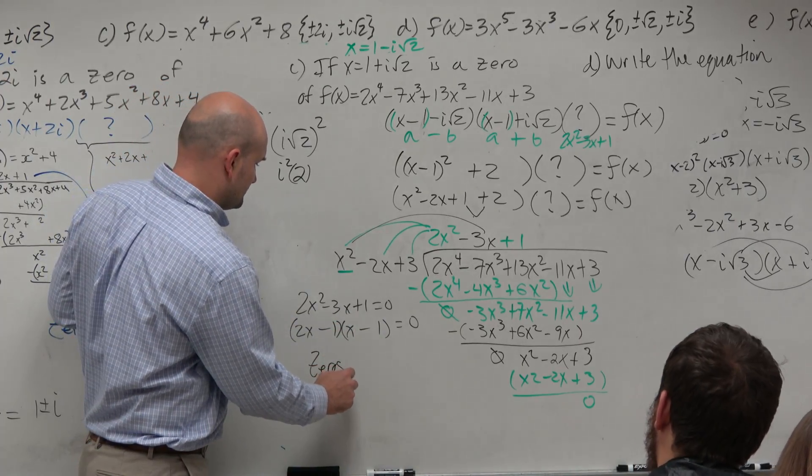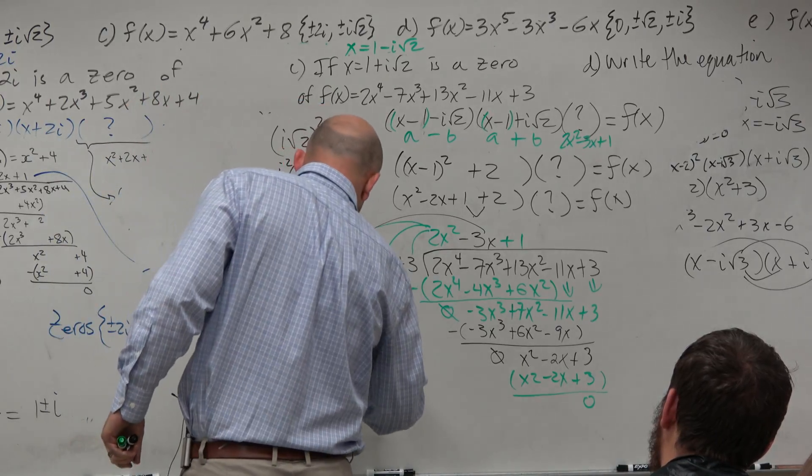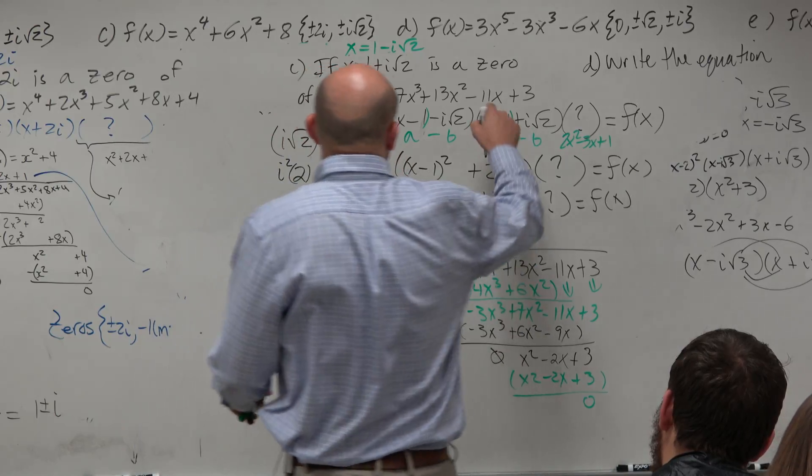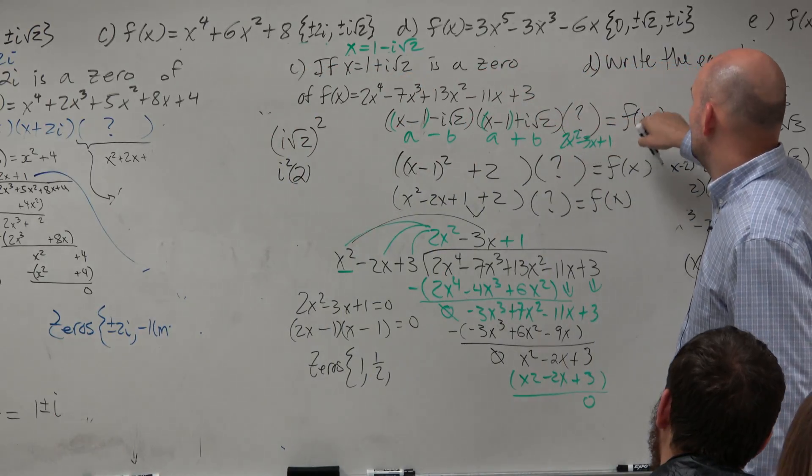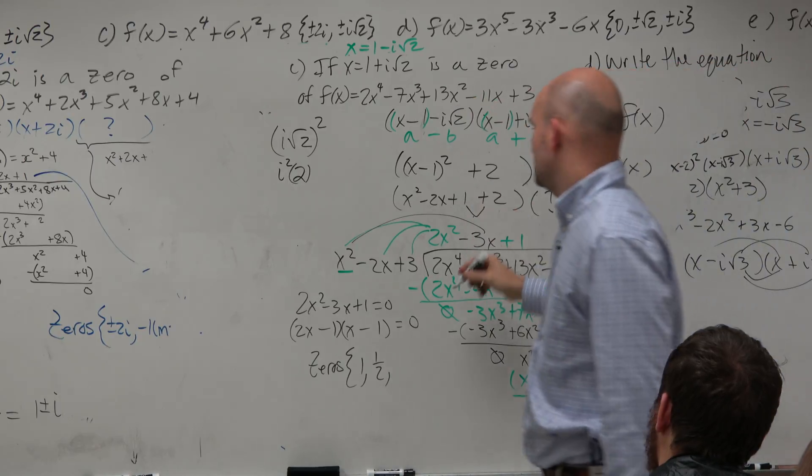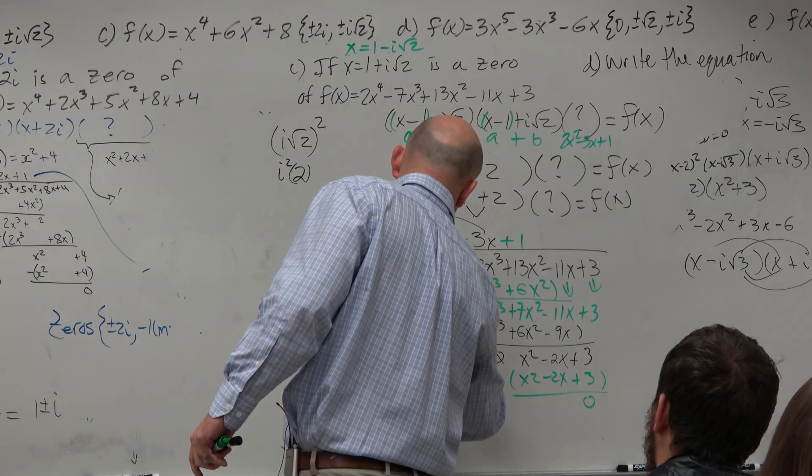my zeros are going to be, now I would set these equal to zero. And you have 1, 1 half, and then 1, 1 half, and where are these? 1 plus or minus i square root of 2.